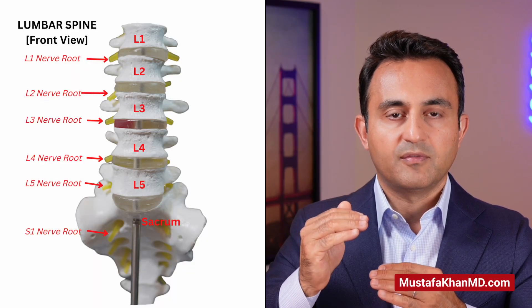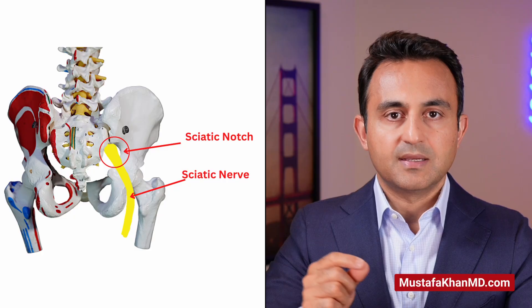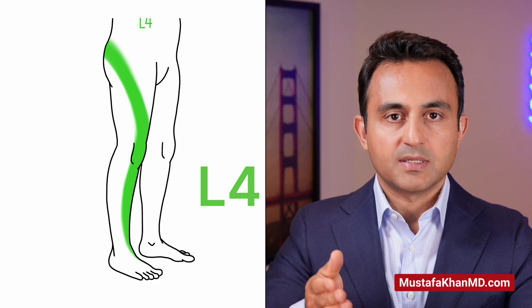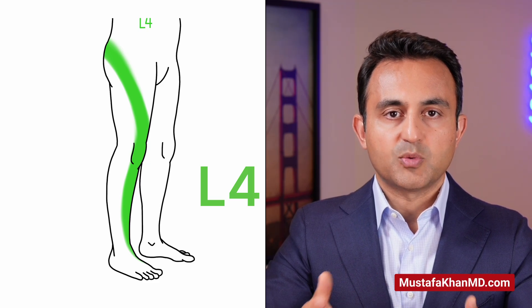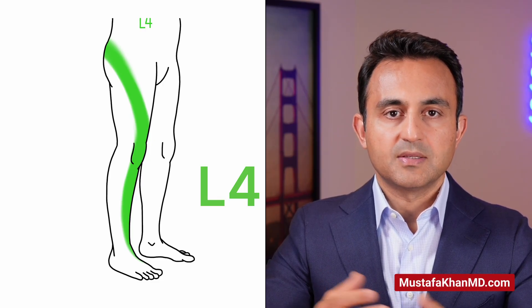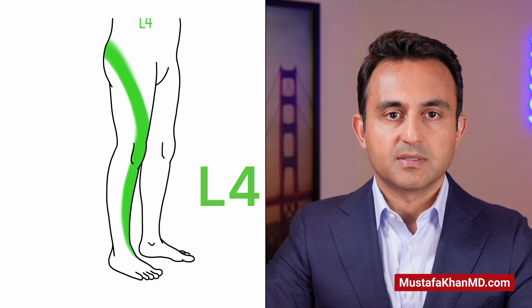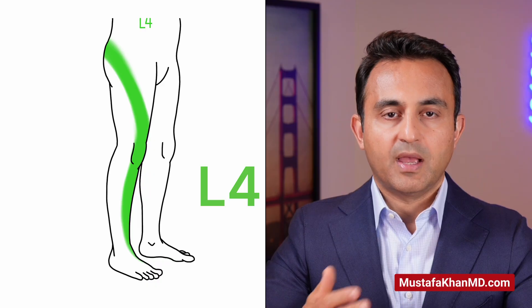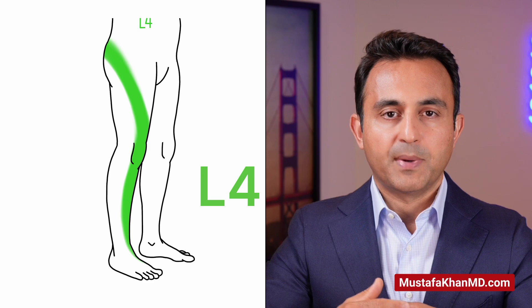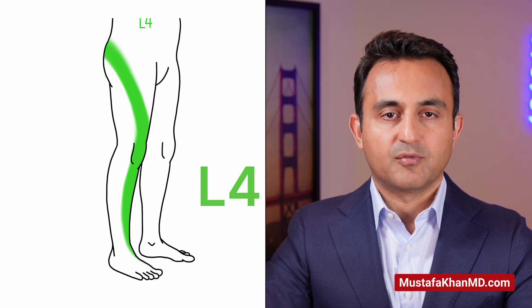Now let's talk about L4 radiculopathy. The L4 nerve root comes out between the L4 and L5 vertebral bodies. After exiting the pelvis through the sciatic notch, the L4 nerve goes into the front of the thigh, crosses the knee, and into the inside of the shin. Patients with an L4 radiculopathy will have pain, numbness, and tingling at these locations. In severe cases, they may also develop what's called a foot drop, meaning they have difficulty pulling up their ankle against resistance. Since the L4 nerve root powers the quadricep muscle, patients may also experience instability of the knee when going up and down stairs.